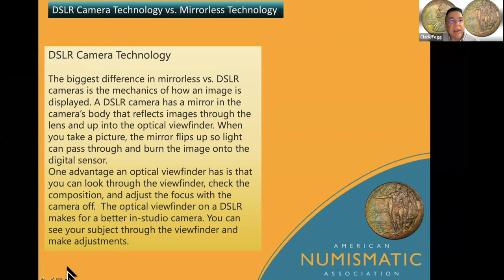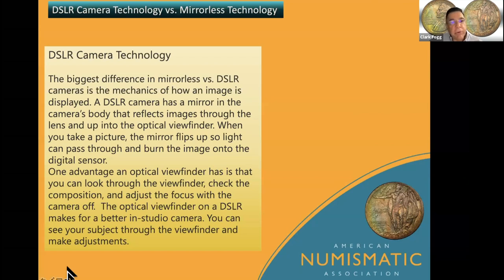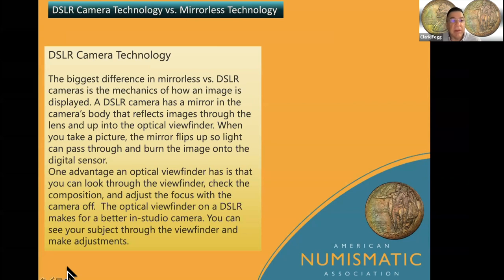It all comes down to digital SLR camera technology. You hear about mirrorless technology and regular digital SLR camera technology — the big push is going towards mirrorless. A DSLR camera has a mirror in the camera body that reflects images through the lens and up into the optical viewfinder. When you take a picture, the mirror flips up.